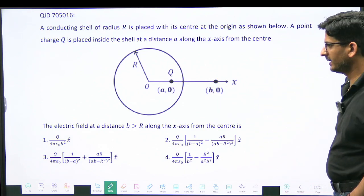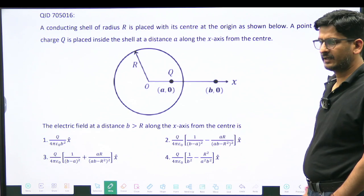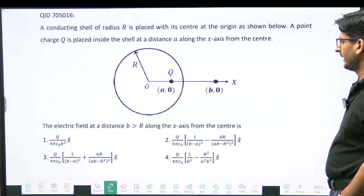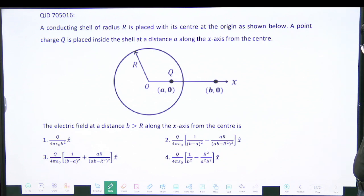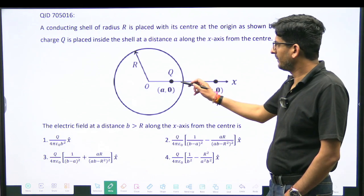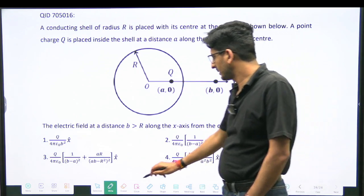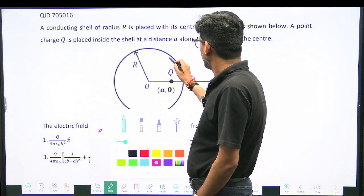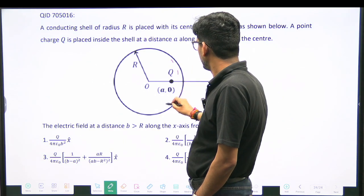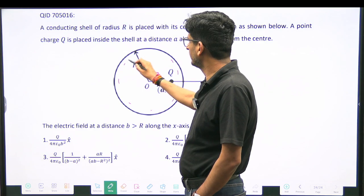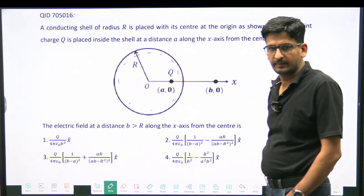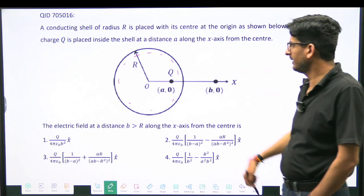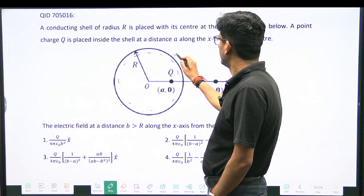So what will happen if you put a charge q here? By induction, negative charge will appear on the inner surface and then outside positive charge will appear like this.